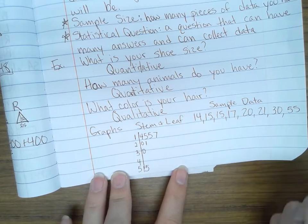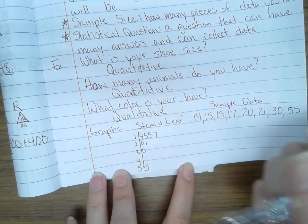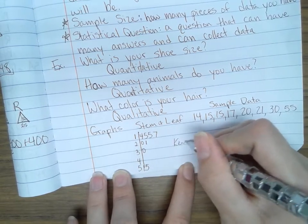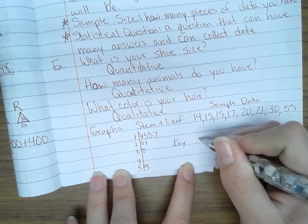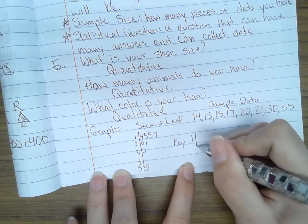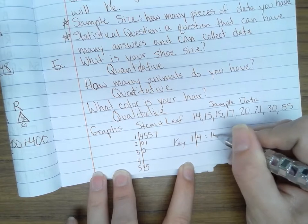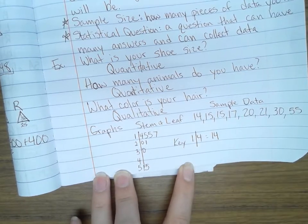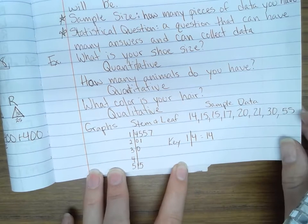I just want to show you that one because it's kind of a funky one. And then they'll write something like this, key. And they'll write 1 line 4 equals 14, just so we know. So that's a stem and leaf plot if you come across those.